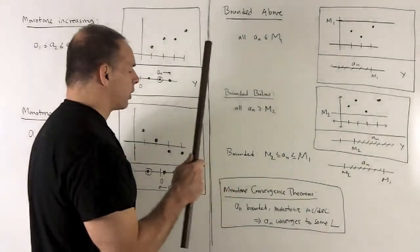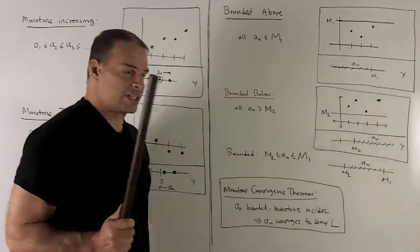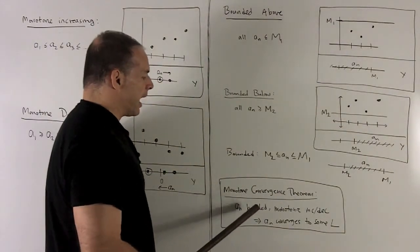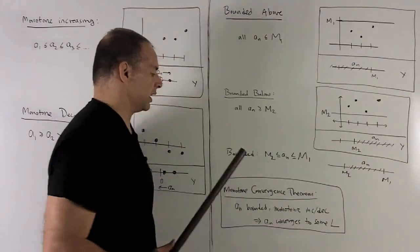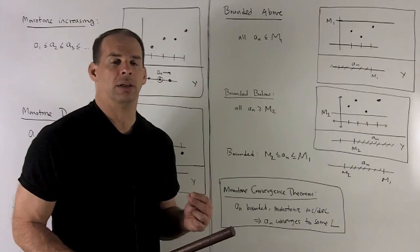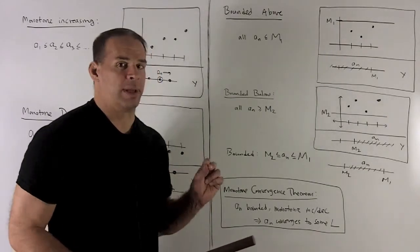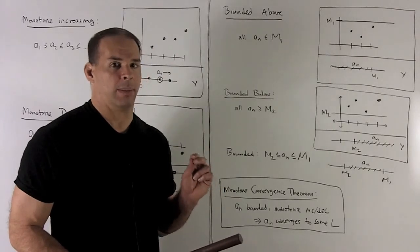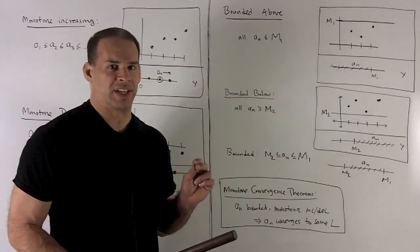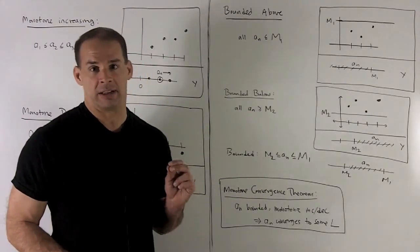So we put these together, and we have this thing called the monotone convergence theorem. It's going to say, if a_n is bounded, monotonic increasing or decreasing, then a_n is going to converge to some limit L. The only downside to this theorem is, it tells us we have a limit, but it gives us no idea what that limit might be. So we'll see an example later on, where the monotone convergence theorem actually helps us out in finding a limit.